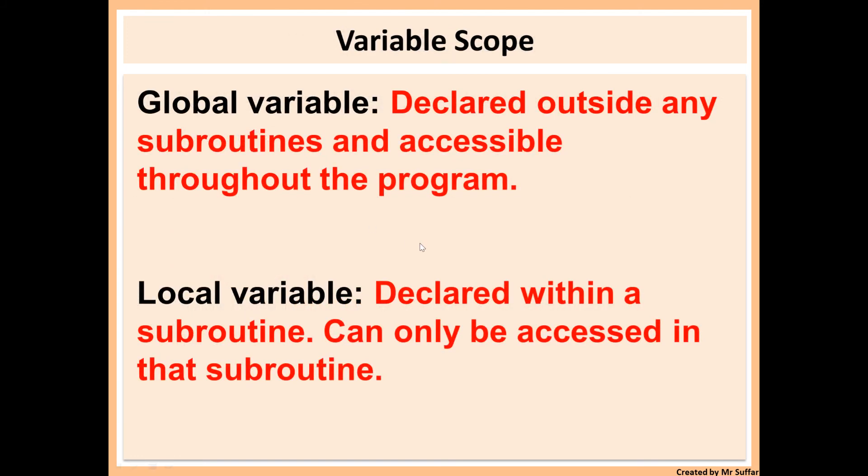Then we have global and local variables. Global variables are declared outside subroutines normally, and they are accessible throughout the program. However, local variables are declared inside subroutines, and they can only be accessed inside that specific subroutine. They cannot be accessed outside the subroutine.